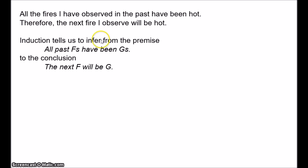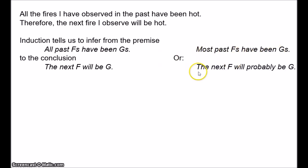So Hume's question is: how is this kind of inference justified? Why should the fact that all observed fires have been hot give us any reason at all to expect that the next fire we observe will be hot? We can generalise this problem. Induction seems to involve a rule which tells us to infer from the premise 'all past F's have been G's' to the conclusion 'the next F will be G.' Going beyond what we've actually observed and drawing conclusions about what hasn't been observed — why should we think this is justified?